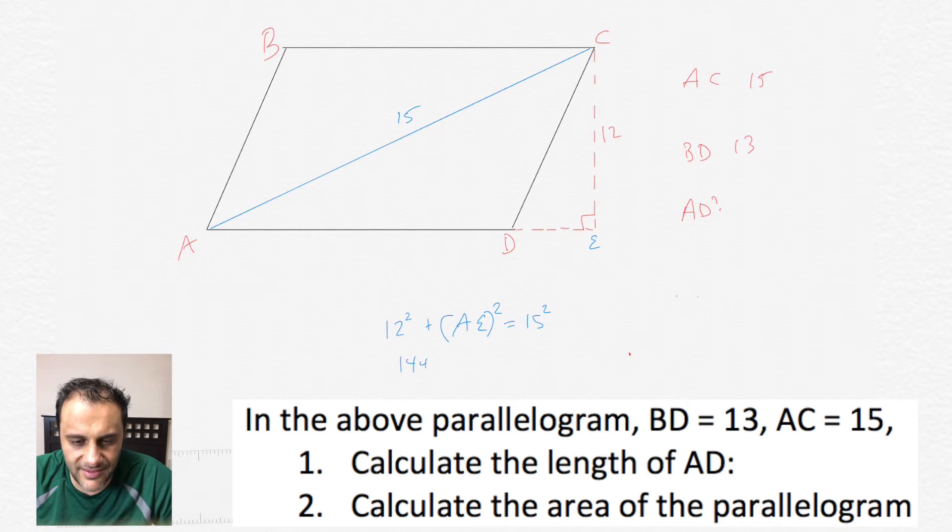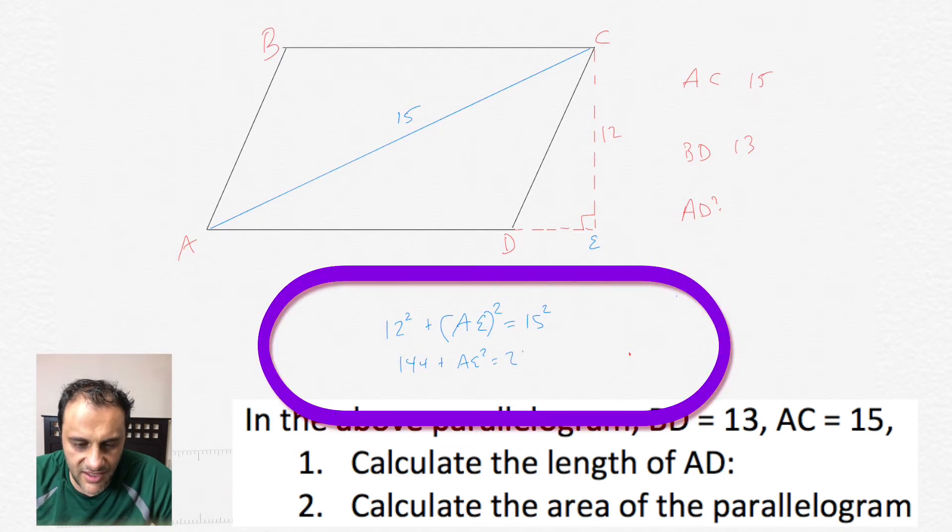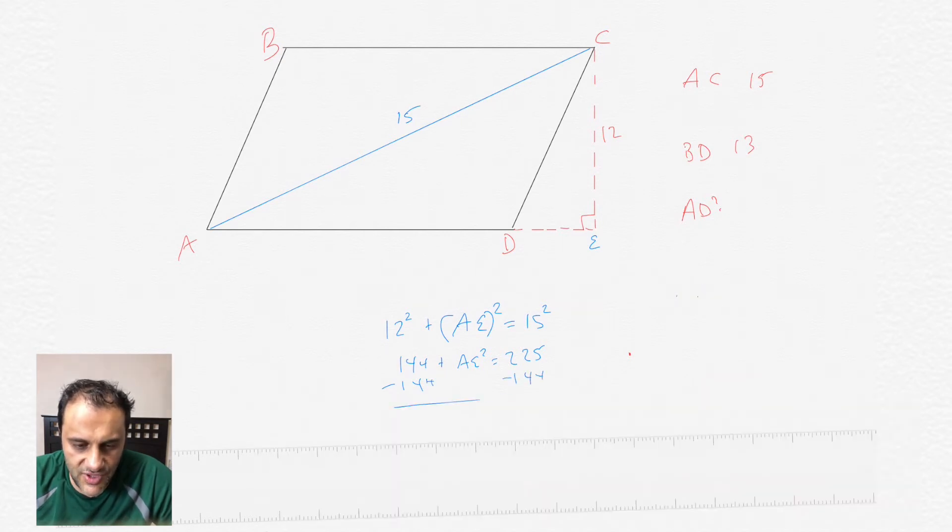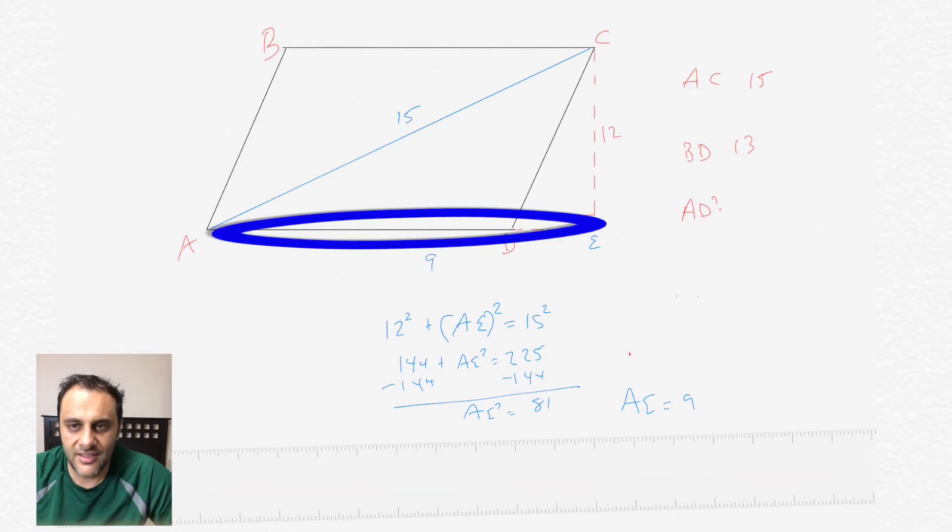So here, that AE is gonna calculate to 9, but let's do it the long way. We have 12 squared, which is 144, plus AE squared, and plus 15 squared, which is 225. And then we subtract 144 from each side, we'll get AE squared equals 81, and the square root of 81 is 9. So the length of AE is 9.